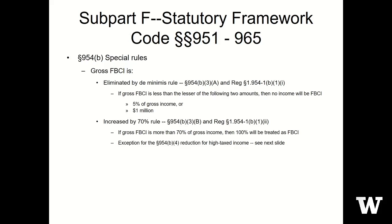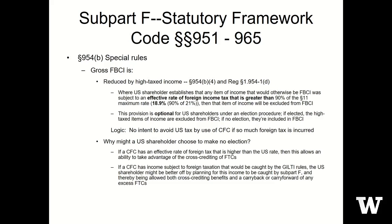The next rule, found in 954B, has become more important. It essentially says that if a country is taxing the company so high that there was no intent to avoid taxation, we won't treat it as subpart F. Interestingly, the way the regulations were written, it is actually optional — the taxpayer elects whether to claim this exception or not.